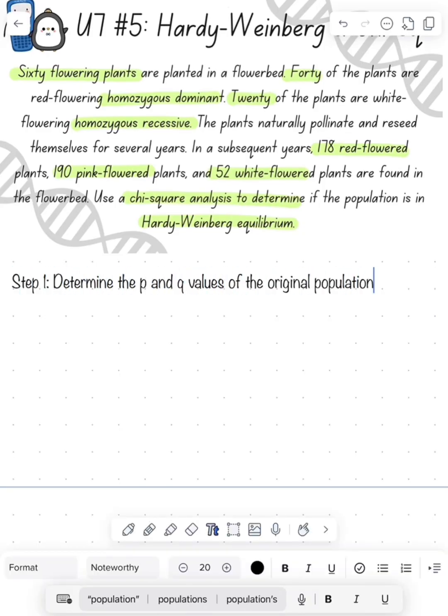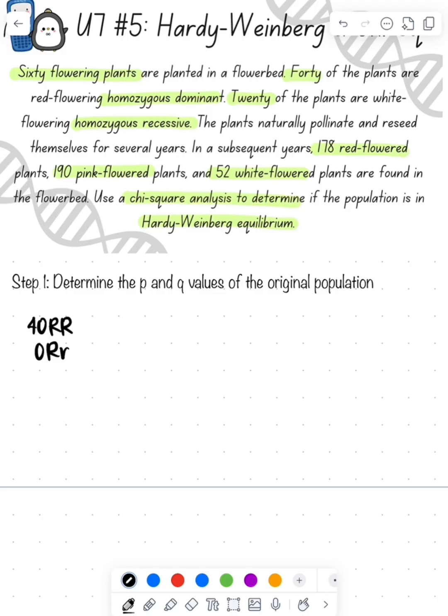First step, we need to figure out the P and the Q value for my original population, where P is going to be the frequency of my dominant allele and Q is the frequency of my recessive allele.